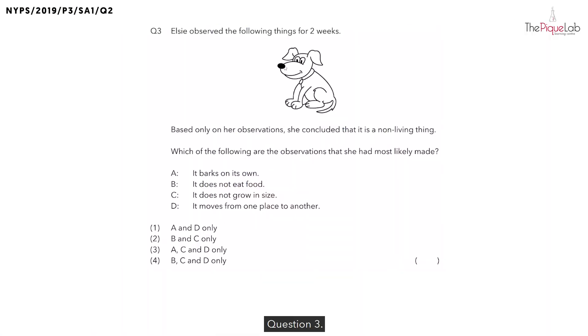Question 3. Elsie observed the following things for two weeks. As you can see from this diagram, there is a cute little dog here. The question says, based only on her observations, she concluded that it is a non-living thing.